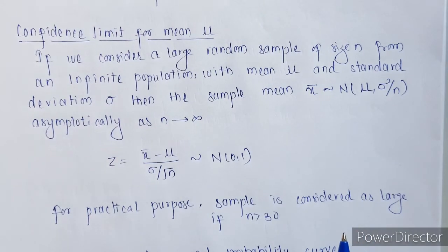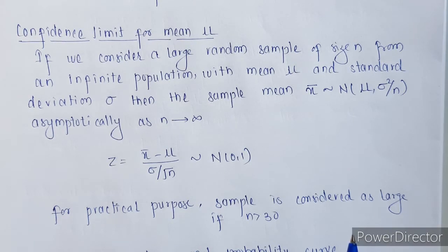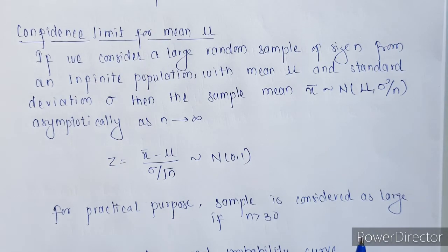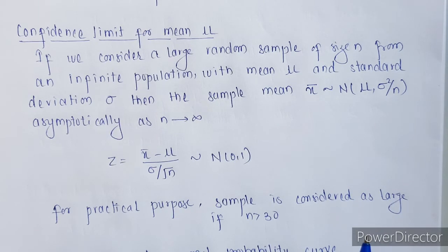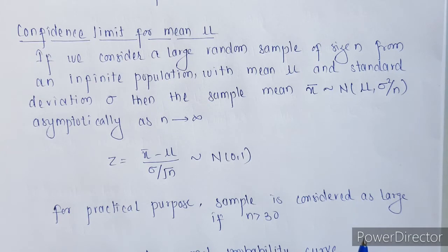Next is the confidence limit for mean mu. If we consider a large random sample of size n from an infinite population with mean mu and standard deviation sigma, then the sample mean x bar is asymptotically normal as n tends towards infinity. For practical purposes, we consider any sample with size more than 30 as a large sample.